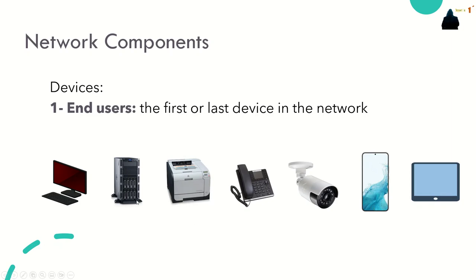A file server is a computer responsible for the storage and management of data, and a web server is a computer that runs a website. We also have network printers, VoIP phones, cameras, security cameras, mobile portable devices such as smartphones, tablets, iPads, wireless credit card readers, and barcode scanners. All of these are end devices because they can only send or receive information and data to or from other devices.